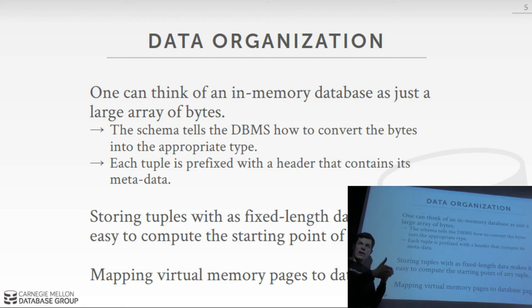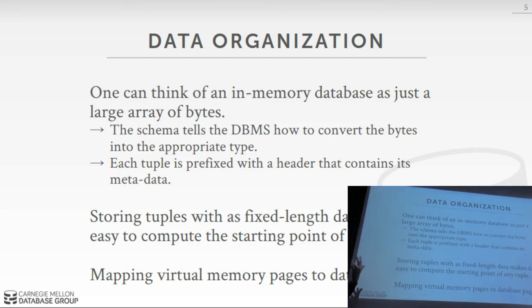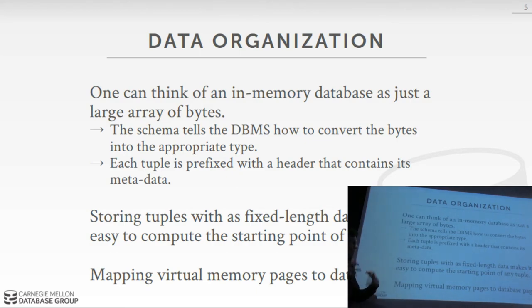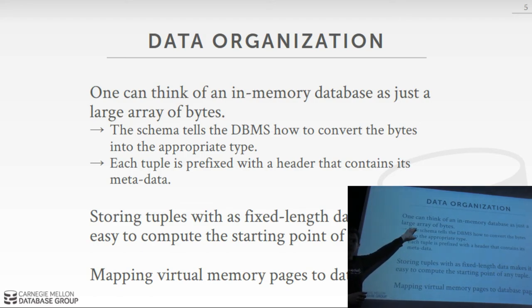If I jump to some offset and I know I'm looking at the fourth attribute as a 32-bit integer, I know how to interpret those bytes as a 32-bit integer. As we talked about with MVCC, every tuple is going to be prefixed with a header containing metadata like timestamps for visibility and flags for deletion. The information needed to interpret the bytes — like this offset is a 32-bit integer — is stored separately in the schema.